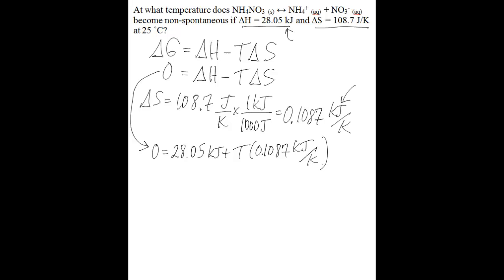Moving your 28.05 to the other side by subtracting from both sides, you'll be left with 28.05 is equal to 0.1087 times T. And then dividing both sides by 0.1087, you're left with a temperature of negative 258.05 kelvins.